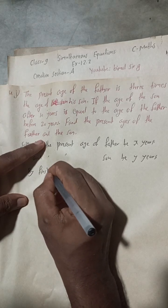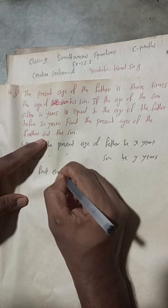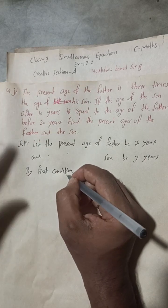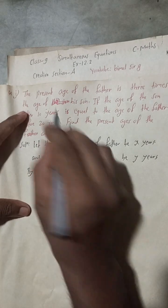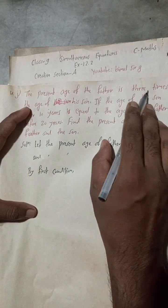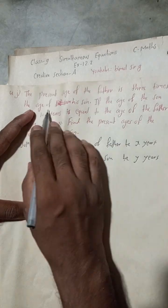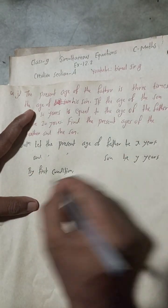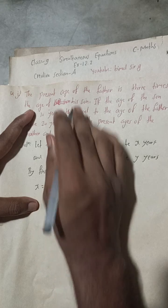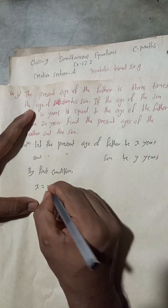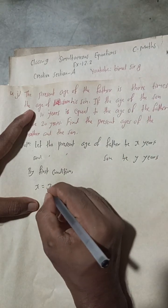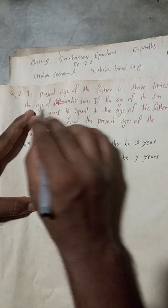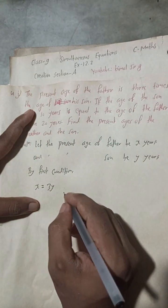First condition: the present age of the father is 3 times the age of his son. So the present age of the father is x, and 3 times the age of his son is 3y. Therefore, x = 3y. This is equation 1.